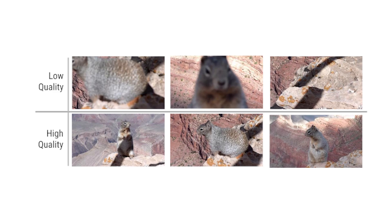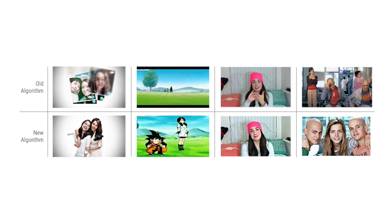But here's the big question: does this new algorithm from YouTube actually generate more engagement, more clicks, more traffic, more views? They say in human tests that people prefer the thumbnails from the new algorithm 65% of the time more than the old system. That tells me that yes, you still should be creating and uploading your own custom thumbnail to your YouTube videos, but maybe YouTube will give you some ideas you might want to consider as well.